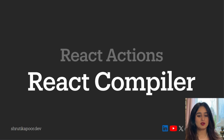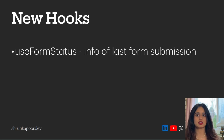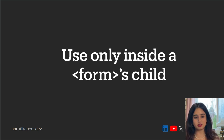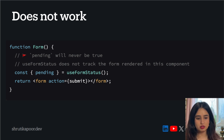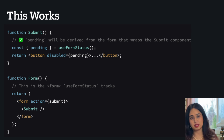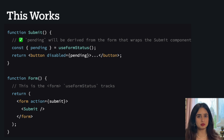useFormStatus is a new hook in React 19 for getting information about the last form submission. One caveat: useFormStatus can only be used inside a form's child component. If you use it directly within the form component itself, it won't work — you have to create a child component, like a Submit component, and use useFormStatus there. If you have design system components migrating from React 18 to 19, this may require some refactoring.